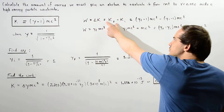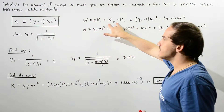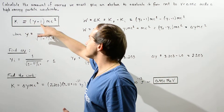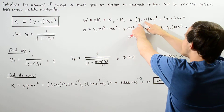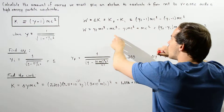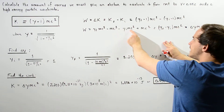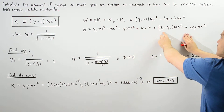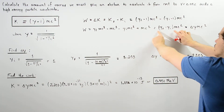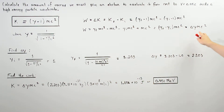The initial relativistic kinetic energy is given by gamma initial minus 1 multiplied by mc squared, and the final relativistic kinetic energy is gamma final minus 1 multiplied by mc squared. Multiplying these out, the mc squared terms cancel, and we're left with gamma final mc squared minus gamma initial mc squared. Factoring out mc squared gives us gamma final minus gamma initial multiplied by mc squared, which we write as delta gamma times mc squared — the amount of work that must be done on the particle.